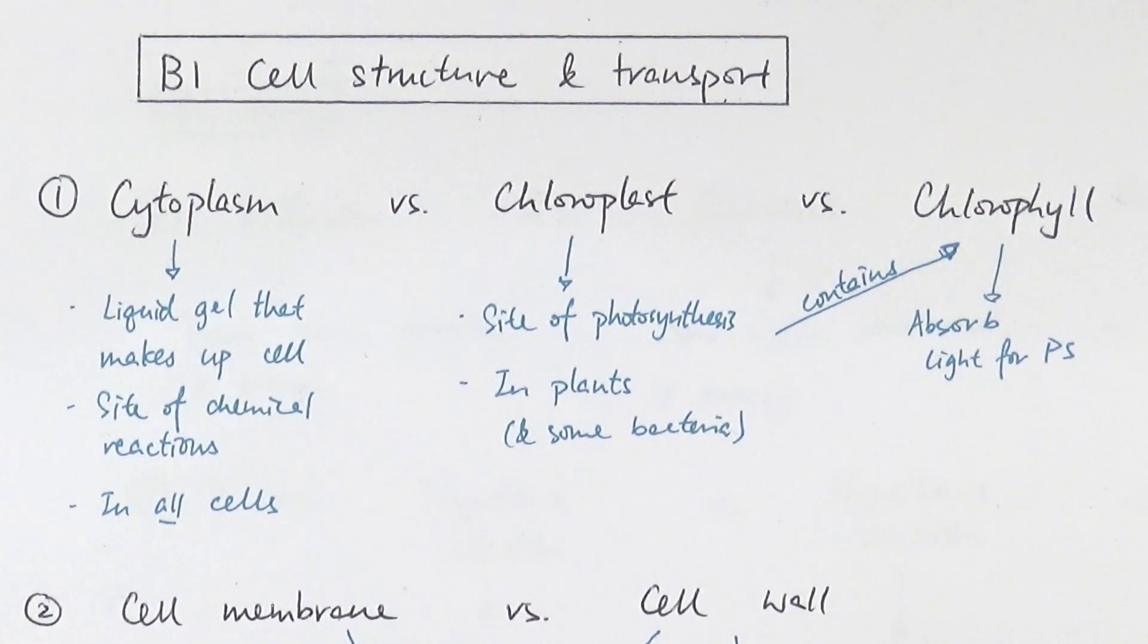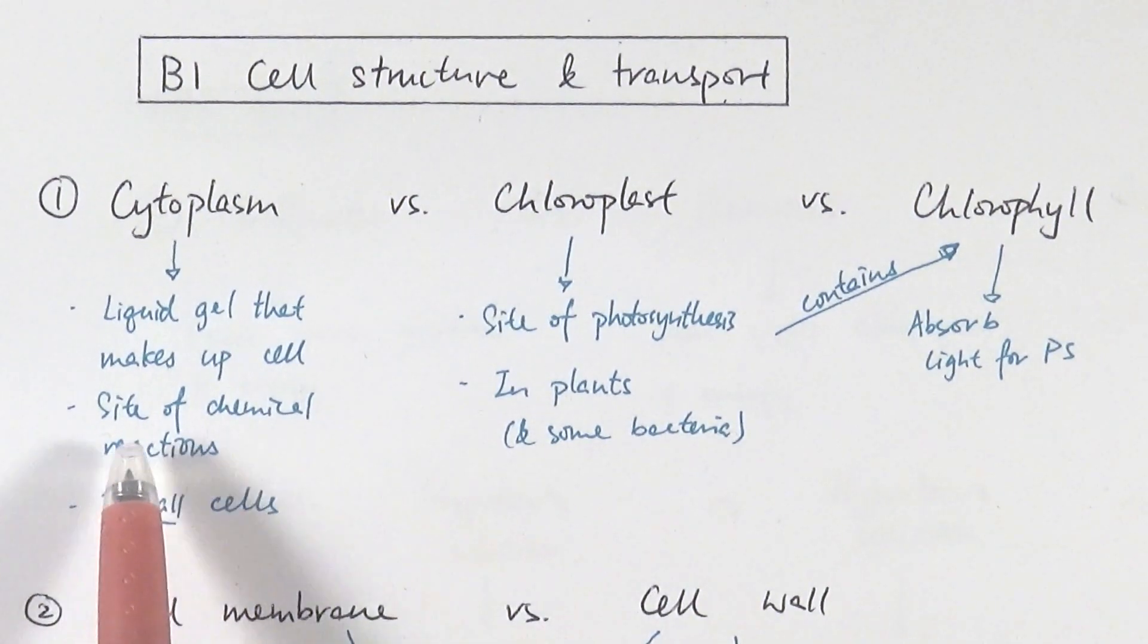Every single cell would have cytoplasm because that's literally the essence or the key crucial part that makes up the existence of a cell. Function-wise it will be the site of chemical reactions, so lots of things in terms of digestion or whatever other things will happen within the cytoplasm.